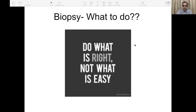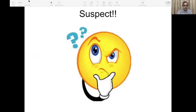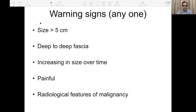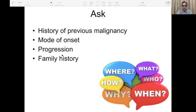I'll split my talk into two parts: what to do and what not to do in biopsy. The first DO is to suspect — unless you suspect, you're not going to biopsy. We have to have a low threshold for suspicion of a malignant bone tumor. We should suspect when the size of any swelling is more than five centimeters, it is deep to the deep fascia, it is increasing in size over time, it is painful, and if the radiological features are suggestive of malignancy.